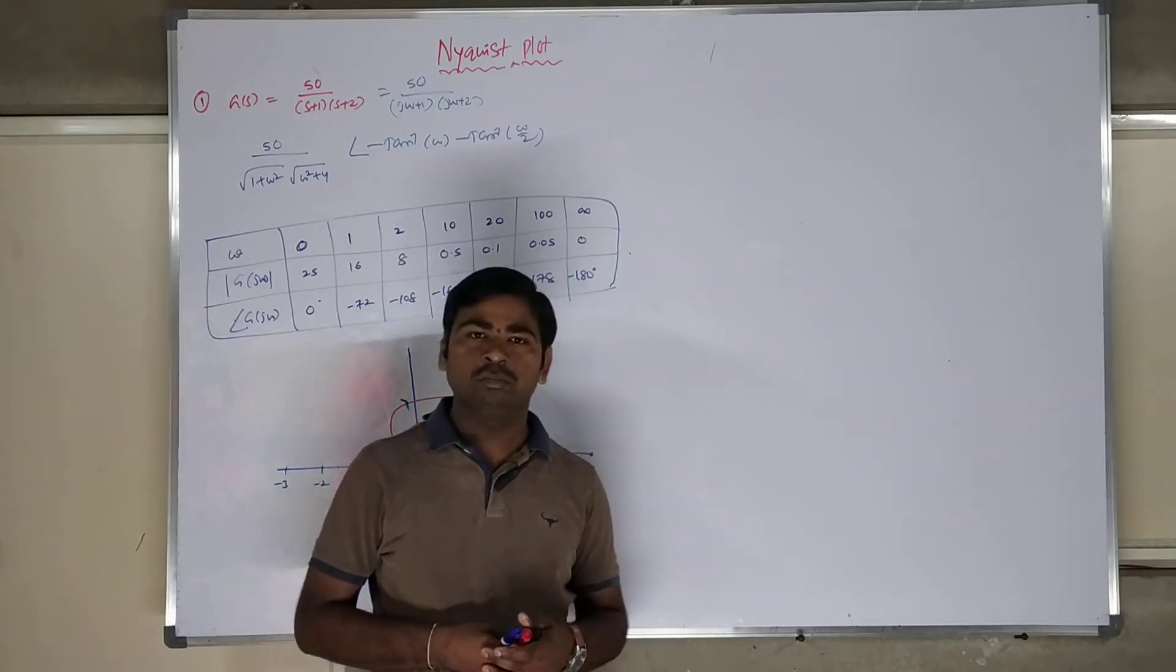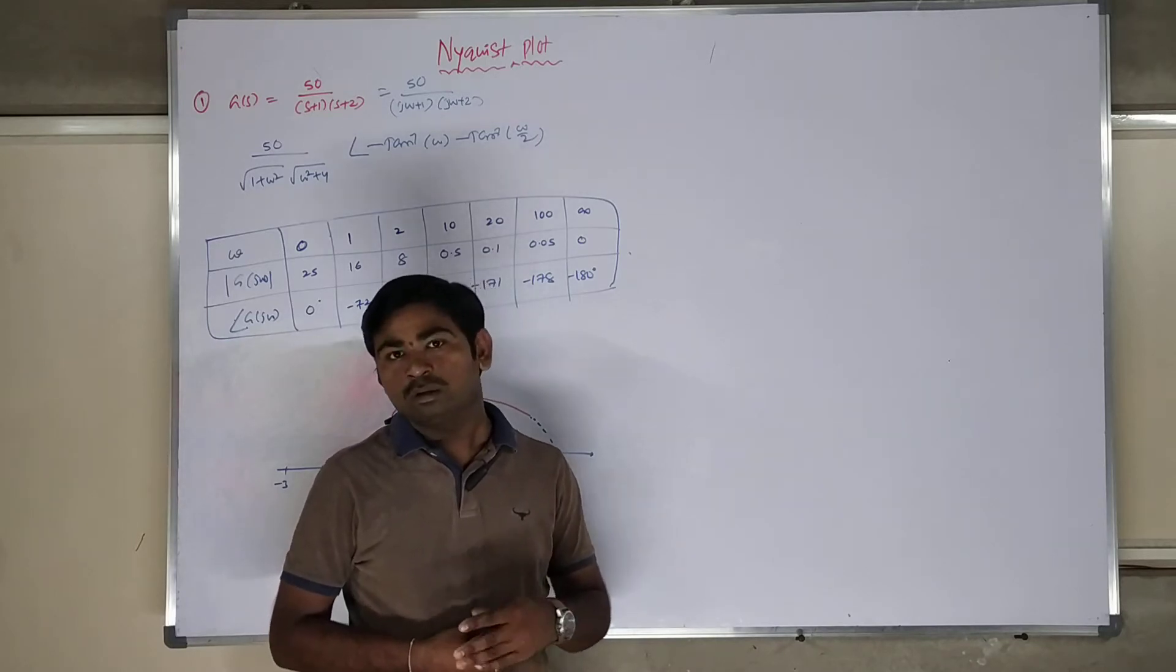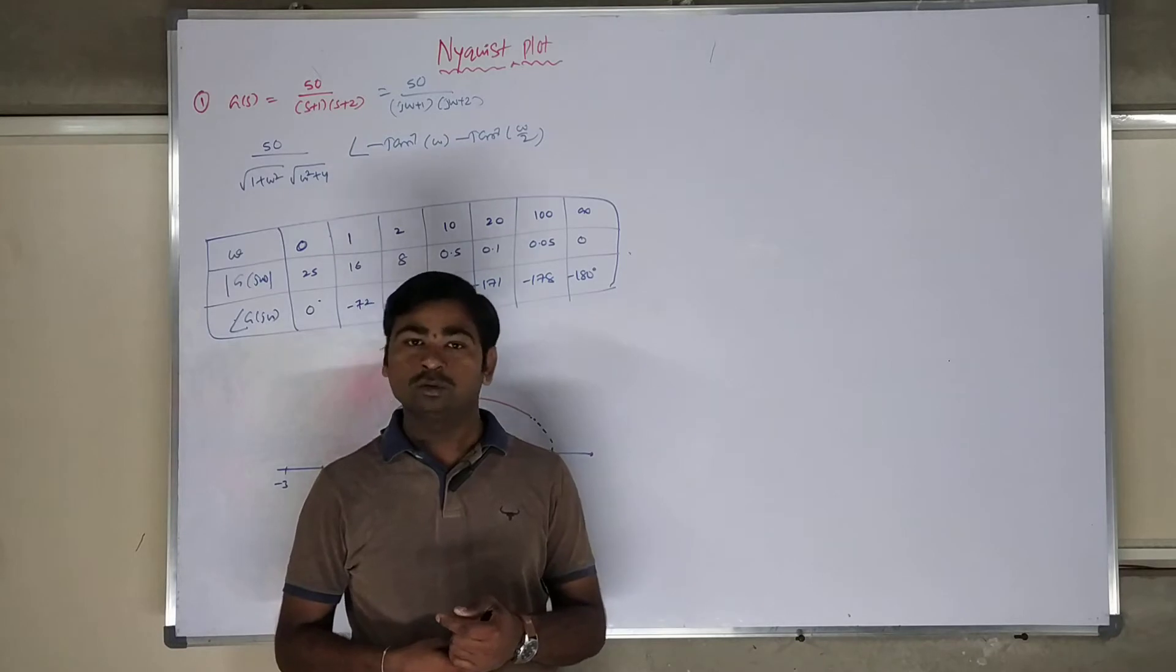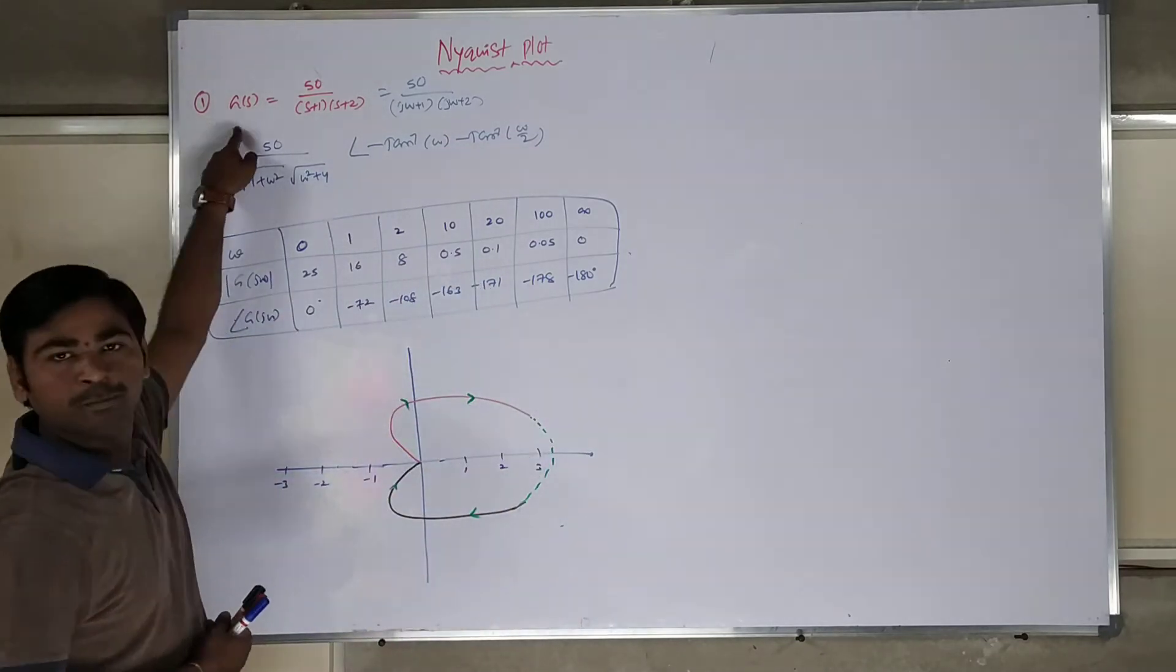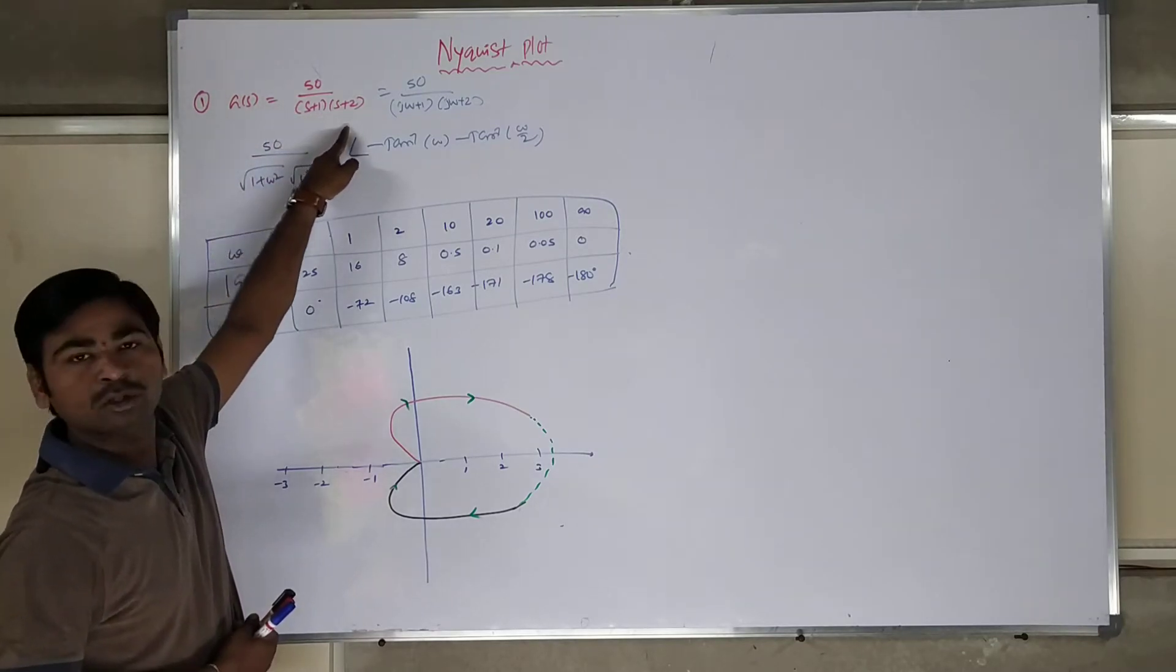For that, I am going to draw polar plot, in continuation I will draw Nyquist plot. Then I am going to find the stability condition of open loop transfer function and corresponding closed loop transfer function. Let's take a sample where G of S is equal to 50 by S plus 1 into S plus 2.